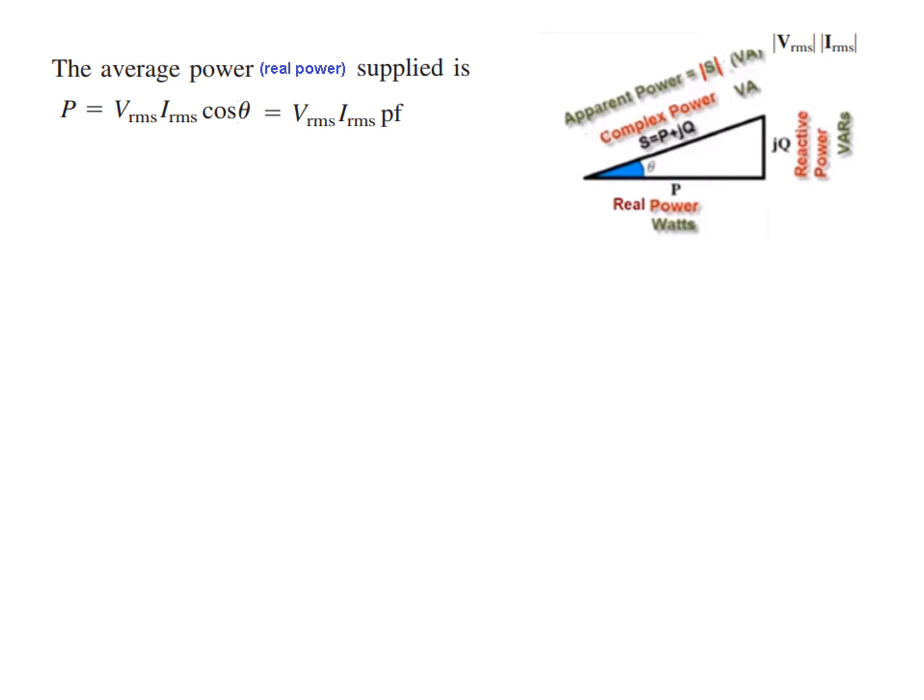Next we have to find the average power, or it is also called real power. So this is the average power. We can write it from even from this triangle—it will be the apparent power, or the hypotenuse, and cosine of theta will give us the real power. So V_rms times I_rms times cosine of theta. We know that cosine of theta is also called power factor.